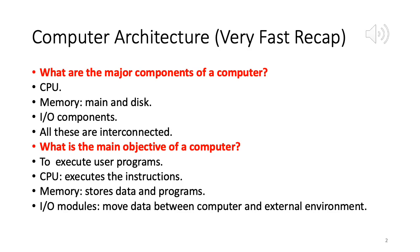I am on slide number two, titled 'Computer Architecture - A Very Fast Recap.' As we discussed in the last lecture, the operating system has heavy interaction with various hardware components. Recalling the various layers: the bottom layer was hardware, then the operating system, then user applications and user programs, and finally the users.